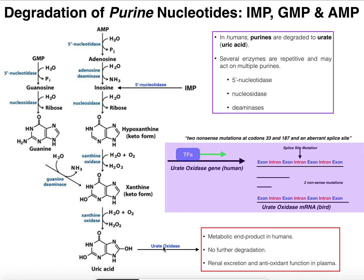Many other organisms — lower primates and pretty much everything else — have urate oxidase. But somewhere in human evolution, we got mutations in the gene encoding urate oxidase, rendering the protein completely non-functional. Humans live a very long lifespan relative to most organisms. Dogs and cats may live to 20, birds into their 30s and 40s, while humans can live past 100. One of the reasons humans are presumed to have such a long life is the protective effects that having a lot of uric acid gives the body.